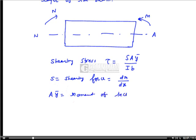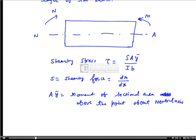In the formula τ = SAȳ / (I·b): Aȳ is the moment of sectional area above the point about the neutral axis; I is the moment of inertia; and b is the width of the beam at the point of interest.